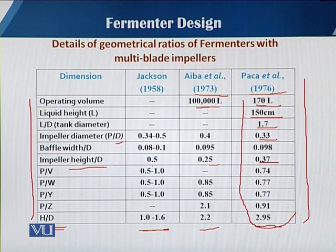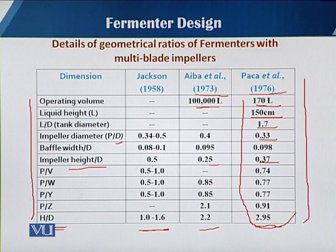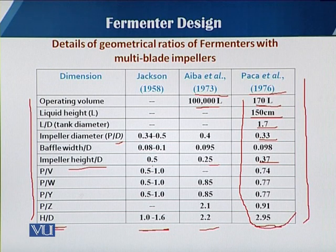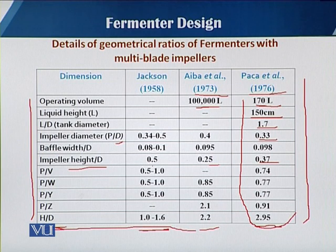For example, if we want to design a fermenter with 500-liter capacity following Pekka et al, first we decide the diameter. By using the H/D ratio of 2.95 and putting in the value of D, we can calculate the actual height of the fermenter.